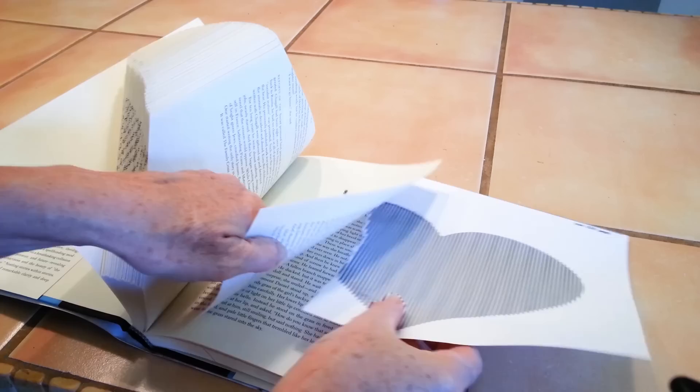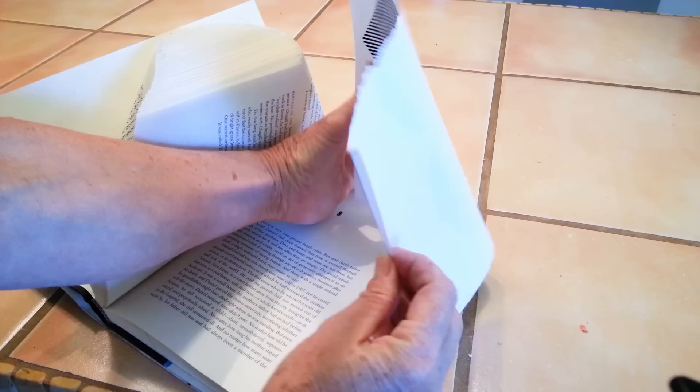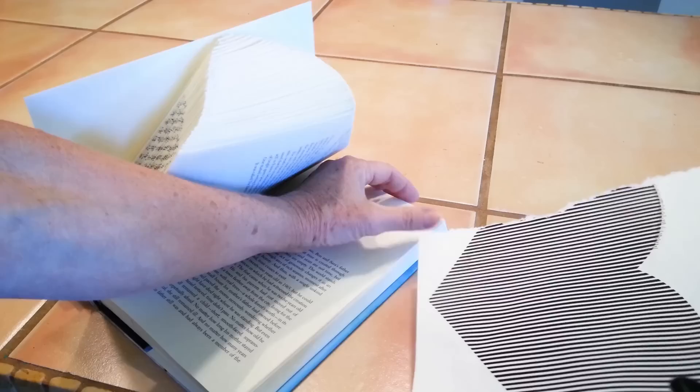Then you simply stick your pattern behind the page that you're going to fold. Make sure it's just one page. Hook it to the top—there's a little tab right there—that tab is going to be hooked to the top of the book.